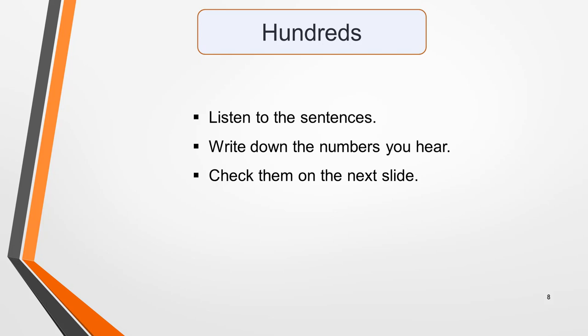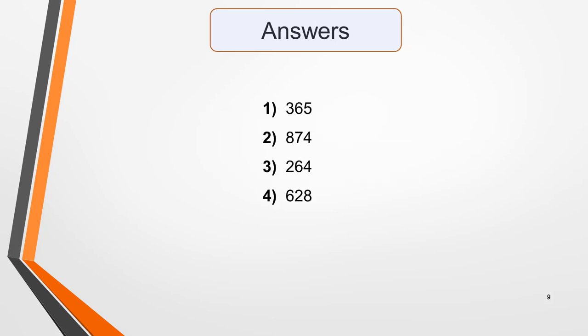1. There are 365 days in the year. 2. Mike and Sally hope to raise lots of money for charity by cycling from Land's End to John O'Groats, which is a distance of 874 miles. 3. The climb to the very top of the world's tallest and fastest slide, located in Kansas City, is 264 steps. And number 4: With the help of genealogists, they were able to trace their family tree back 628 years. Here are the answers: 365, 874, 264, and 628. If you've made any mistakes, go back and listen again.